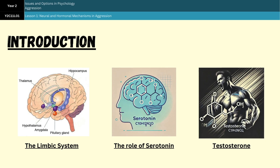Neural mechanisms generally focus on specific structures in the brain, as well as neurochemical causes for behavior. We're going to be looking at the limbic system and the role of serotonin deficiency. Then on the hormonal side of things, we're going to be focusing on the role of testosterone, which has long been linked to aggressive behavior, particularly in males. I'm going to talk you through the basic outline points for each concept and give you enough information to write a six mark outline.